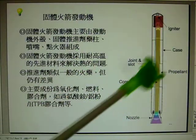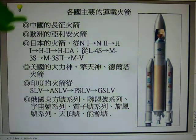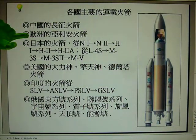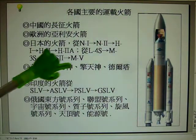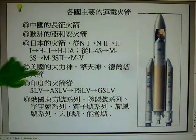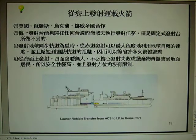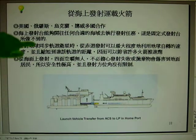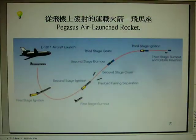This is the solid rocket booster or solid rocket motors. We will also introduce many kinds of launch vehicles from each country, including China's launch vehicle, the European Space Agency's launch vehicle, Japan's launch vehicle, and America's Titan, Atlas, and Delta launch vehicles, as well as India's, Israel's, Pakistan's, and Russia's launch vehicles. We will also introduce many kinds of launch methods, including launch from the sea and launch from a submarine.